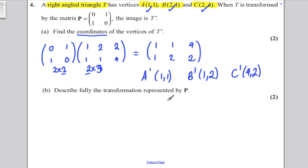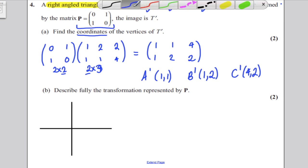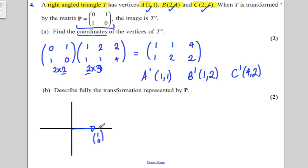Now, it says describe fully the transformation represented by P. Lots of students try and think about where triangle T goes to T prime, there's no need to do that. You have the matrix here, all you need to do is consider it in the most general terms. You have a matrix, and you just work out how the matrix affects 1, 0, and how it affects 0, 1, the way we always do it.